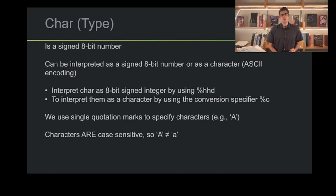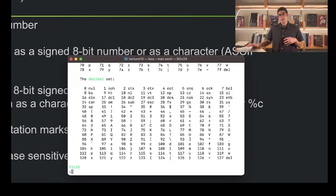Keep in mind that characters are case sensitive, so capital A is not the same as lowercase A. If we look at the ASCII table, we'll see why. We can see that the capital letters and lowercase letters correspond to different numbers. For example, 65 corresponds to capital A and 97 corresponds to lowercase A.